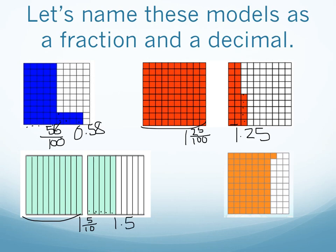This last model shows me seventy-one hundredths, for seventy-one over one hundred as a fraction, and zero point seven one as a decimal.